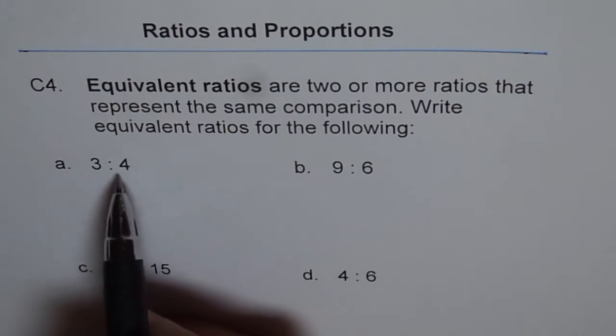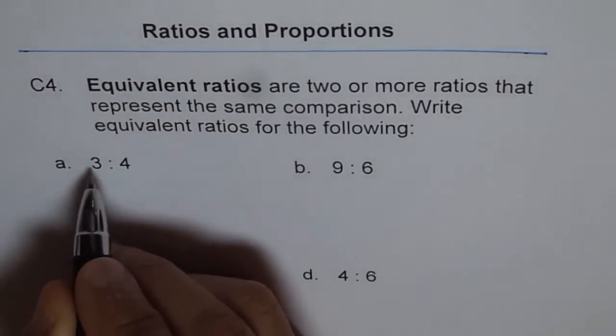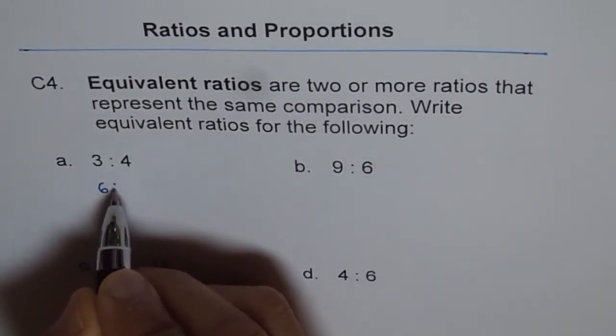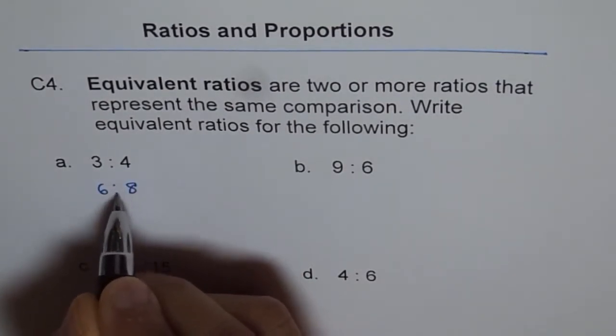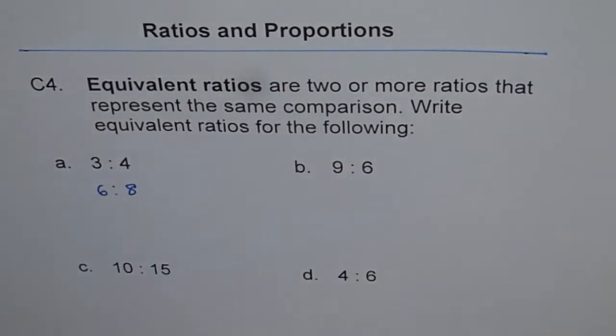Let's say we have two groups of 3 is to 4, then it could be 2 times 3 is 6 and 2 times 4 is 8. So 6 is to 8 is also equal to 3 is to 4.